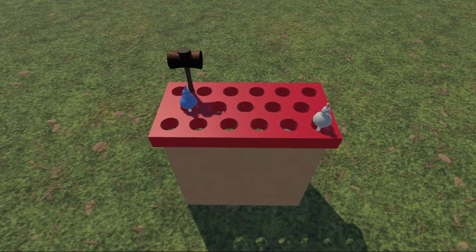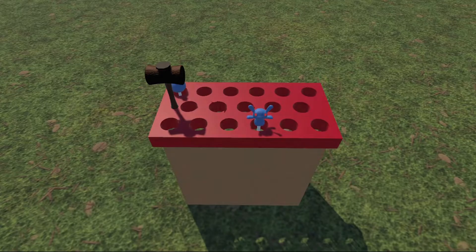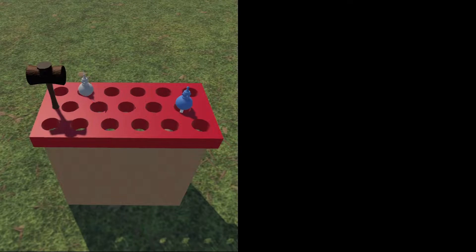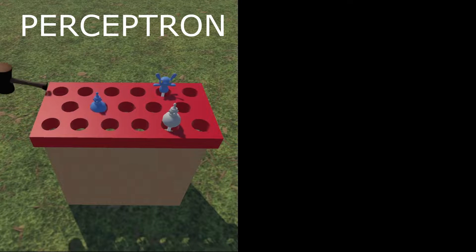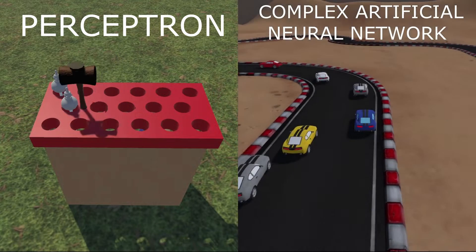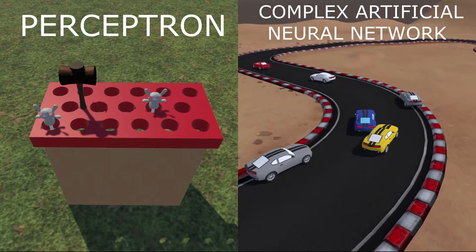In this video we will take a look at the basics of artificial neural networks. We will create the simplest type of artificial neural network called Perceptron, which is a network with only one neuron, and a complex network that will learn based on the player's input.